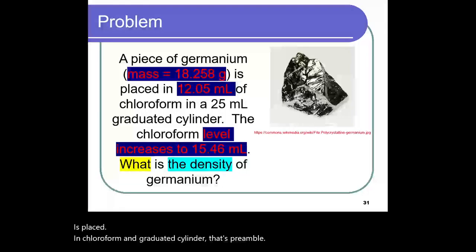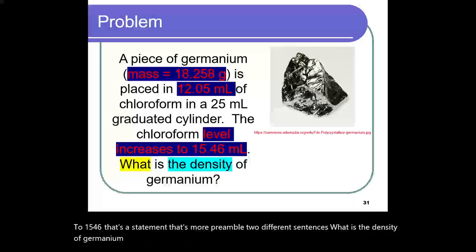The chloroform level increases to 15.46. That's a statement. That's more preamble. Two different sentences. What is the density of germanium? Question word. What is the density? Okay. Density.